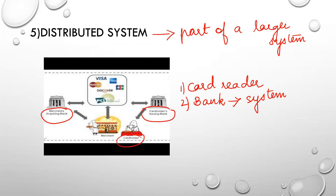Another example is your ATM machine. You put your card into the ATM machine and your card reader — which is an embedded system — reads the number. Then the control goes to your bank; the bank server is on, which is again a system. From that system the money is deducted and you get the money from the dispenser. So distributed system means the embedded system is a part of a larger system.